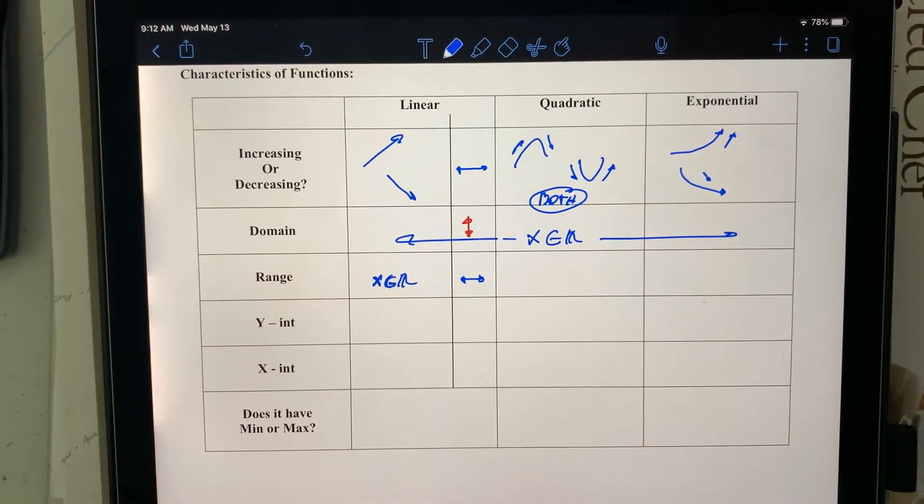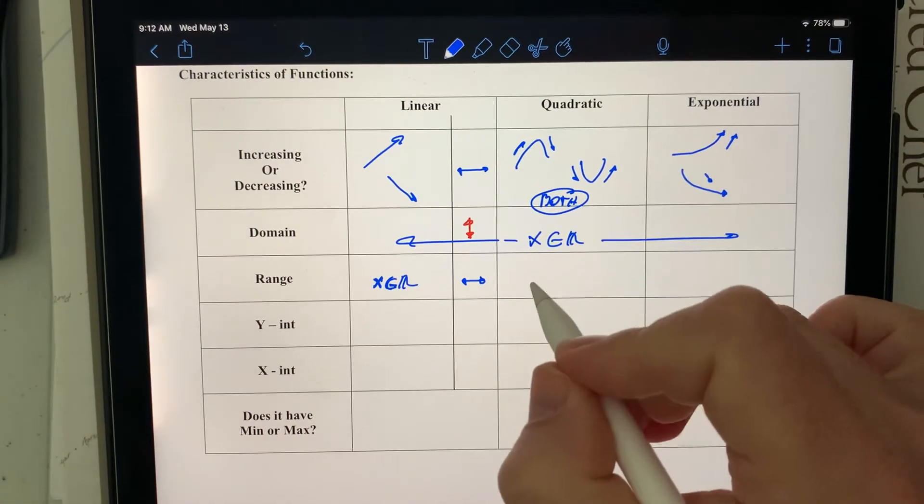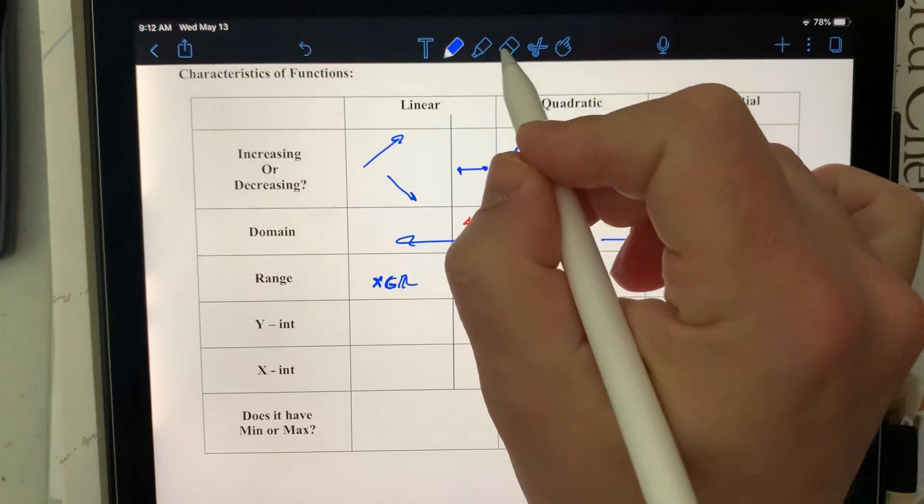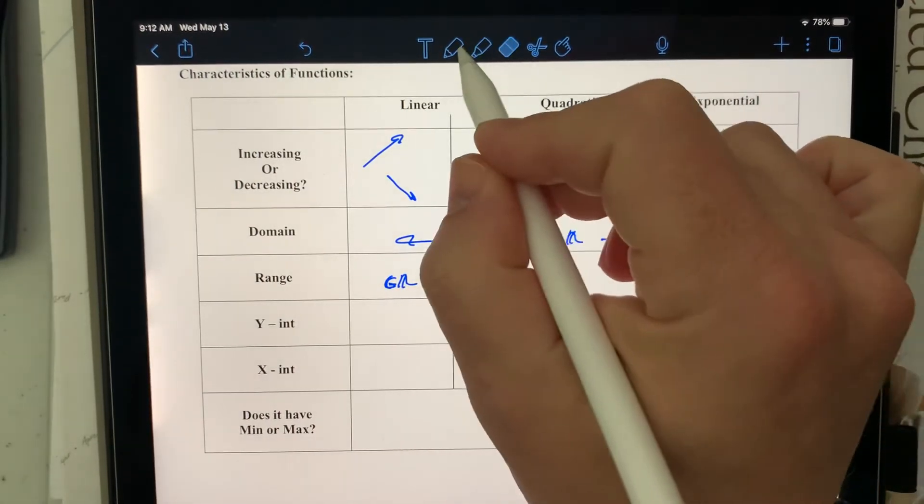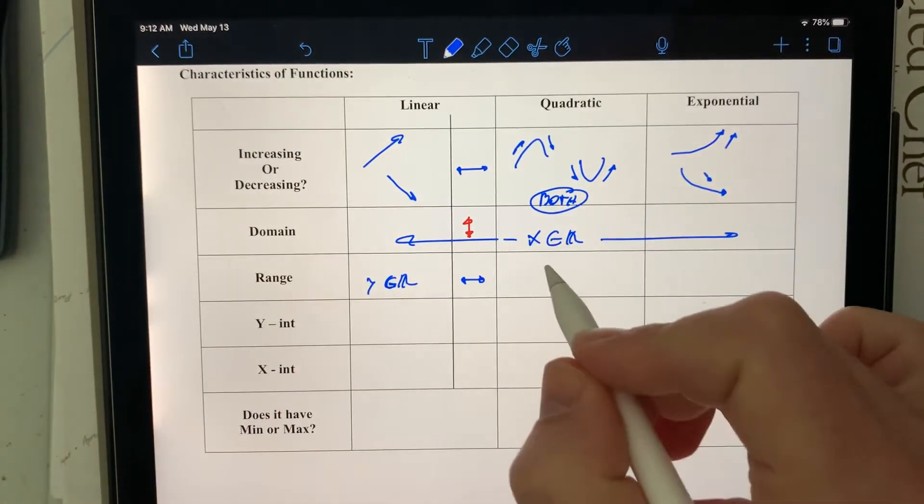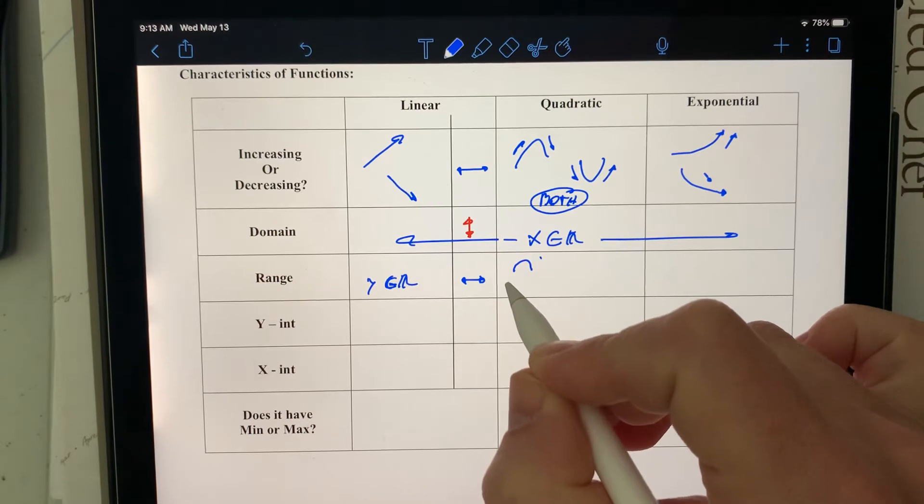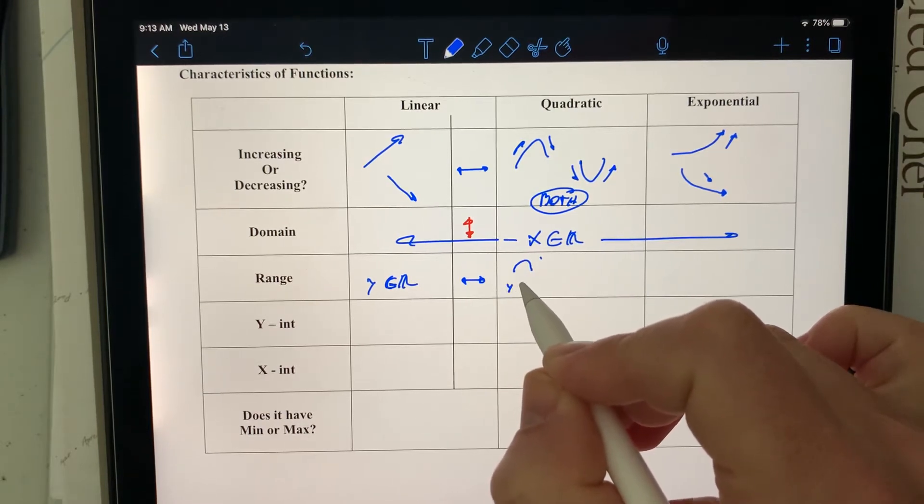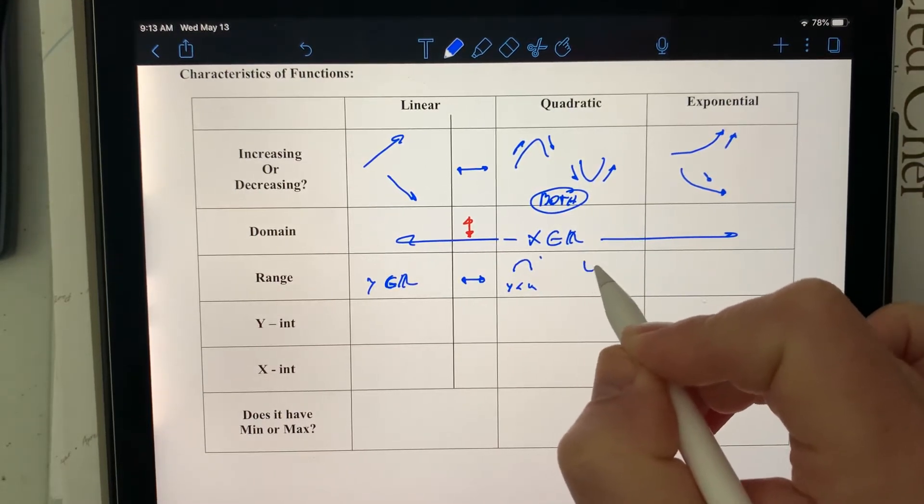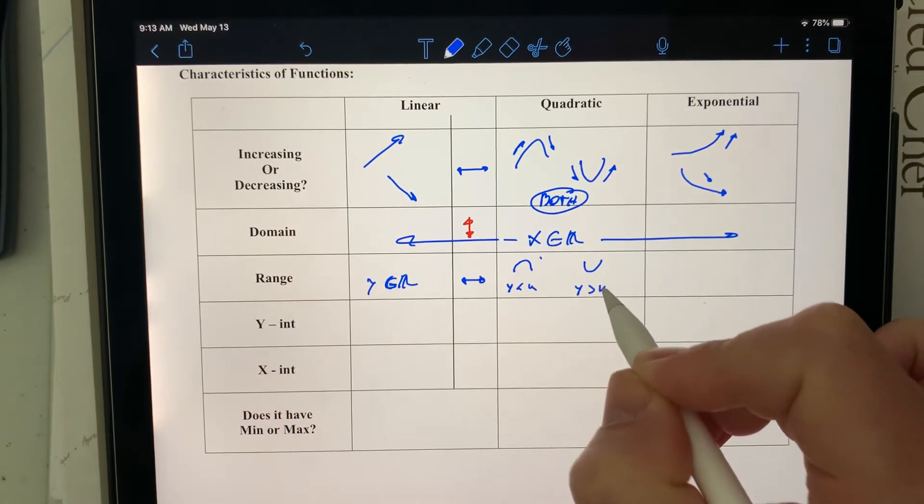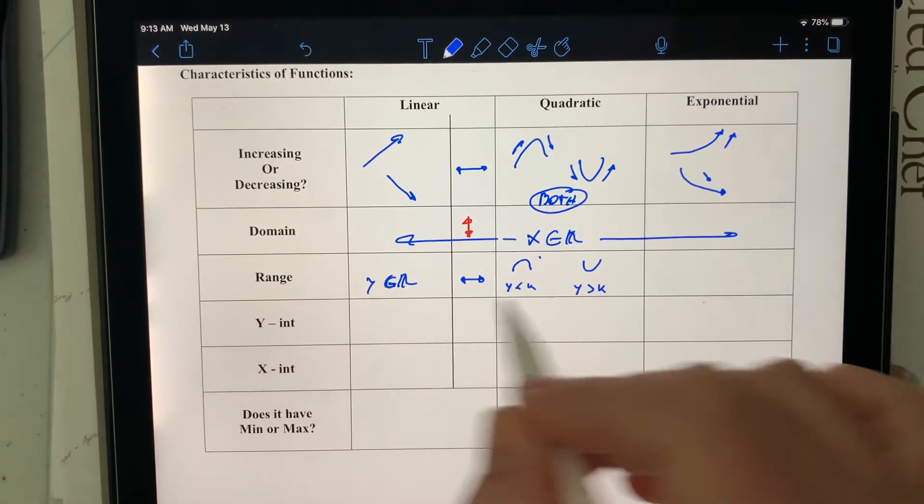And quadratics, so the range, it depends. It's going to be y, it's not x, it's going to be y. So if it's like this, then the highest value would be k, and therefore y is less than k. If it opens up, k would be at the bottom, so y would be bigger than k, and y belongs to the real numbers.